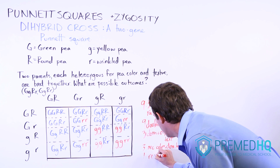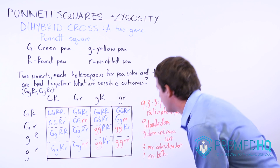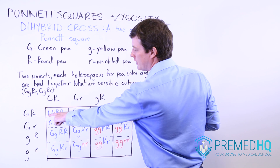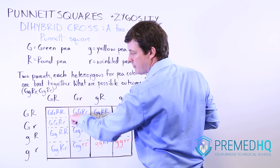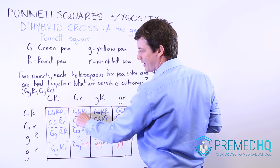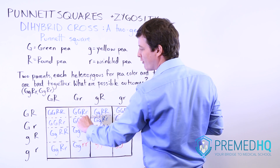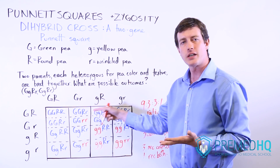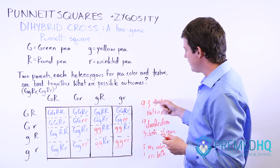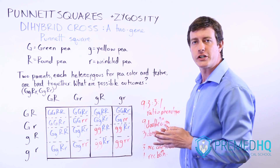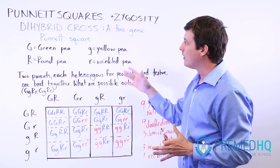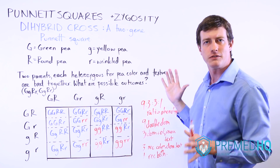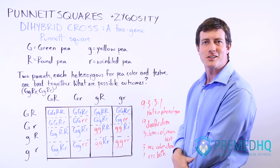Notice here we're looking at phenotypes, not genotypes. This doesn't distinguish, for example, between something that is homozygous dominant for both versus something that is homozygous dominant for color but heterozygous for texture, because ultimately the phenotype will be the same. So you see this 9-3-3-1 ratio of phenotypes when dealing with a dihybrid cross where both parents are heterozygotes following a traditional dominance and recessiveness pattern.